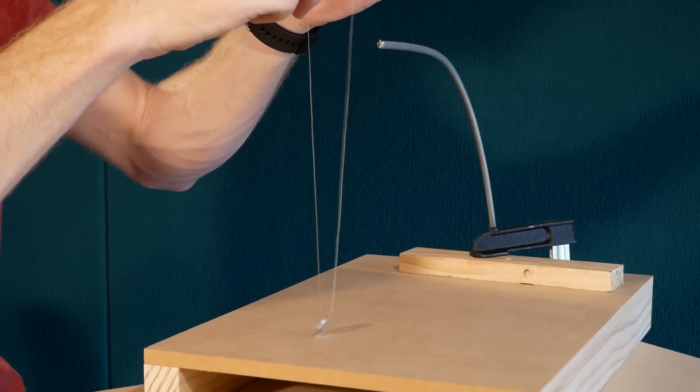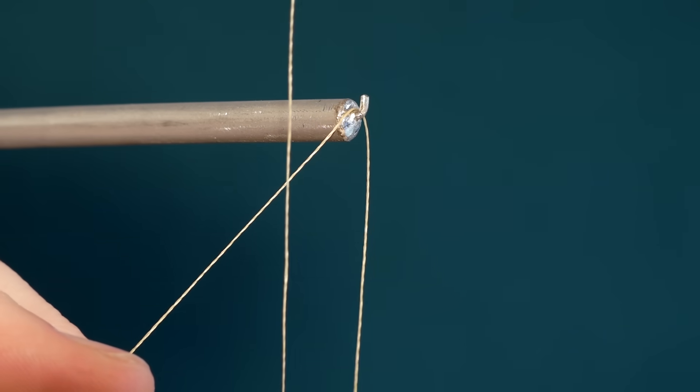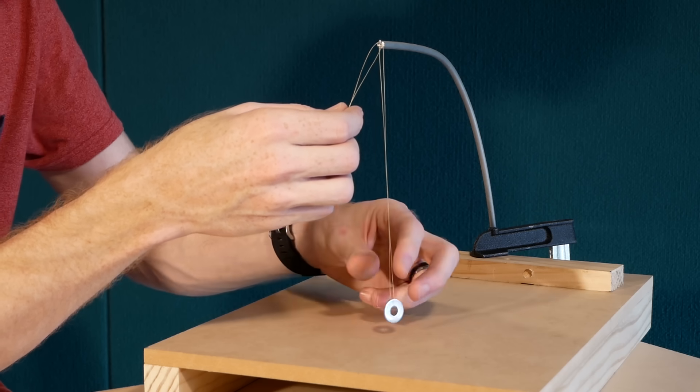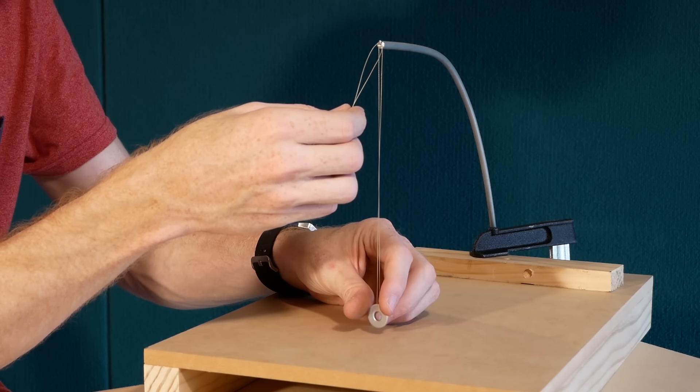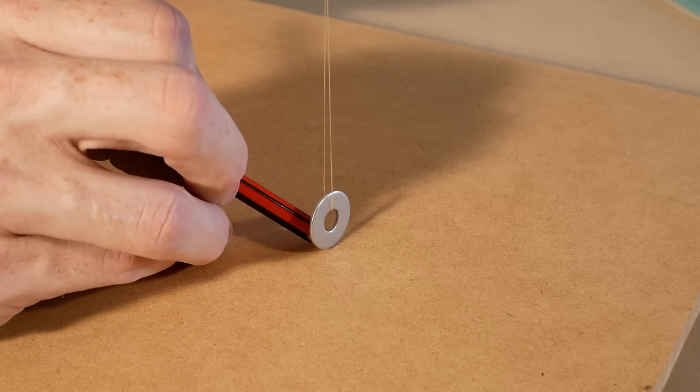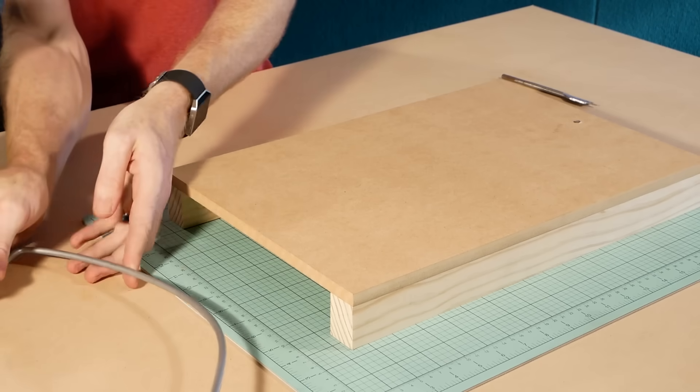Next we need to drill the hole that will allow the nichrome wire to poke through the surface of the cutter. The hole needs to be perfectly below the small hook at the end of the rod. To achieve this I simply hang a piece of string with a small weight from the hook. With the weight stable I mark the point where it first touches the surface. Then remove the rod from the base so we can drill out the hole.